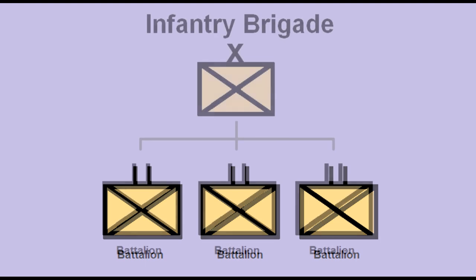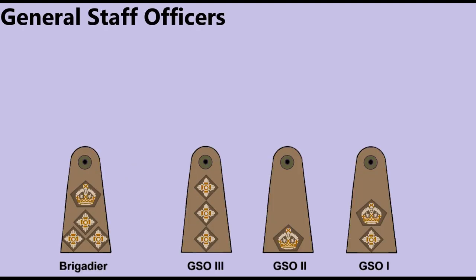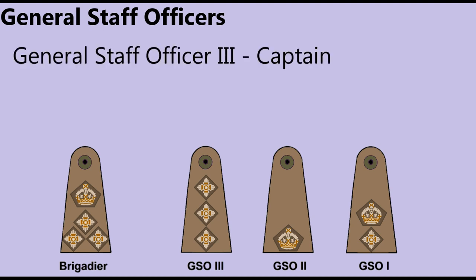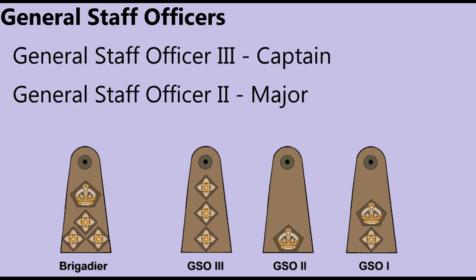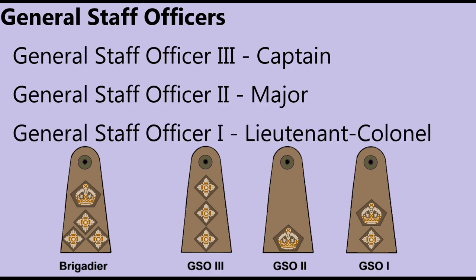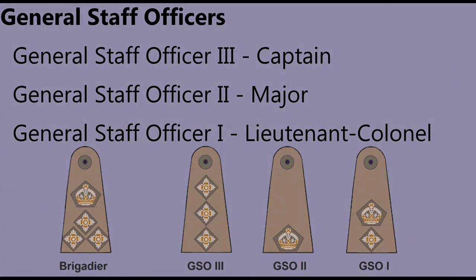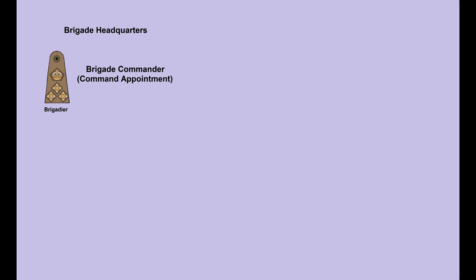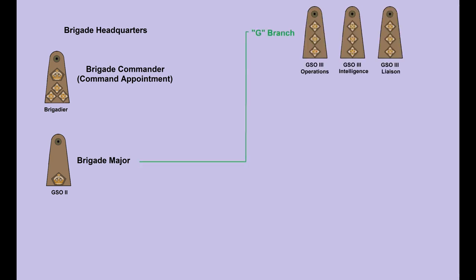Combat units were grouped into formations called brigades. Under the Brigadier's command were a number of General Staff officers. There were three grades of General Staff Officer: GSO-3 was a Captain, GSO-2 was a Major, and GSO-1 was a Lieutenant Colonel. The Senior Staff Officer at Brigade Headquarters was the Brigade Major. He coordinated all work of the HQ and had a number of GSO-3 of the G Branch below him tasked to coordinate operations, intelligence, and liaison.